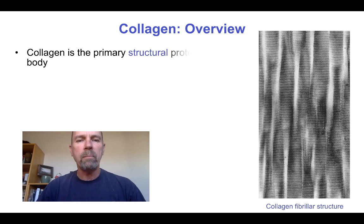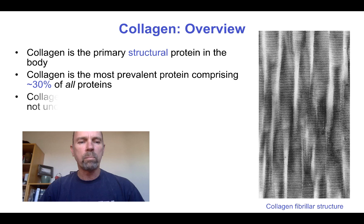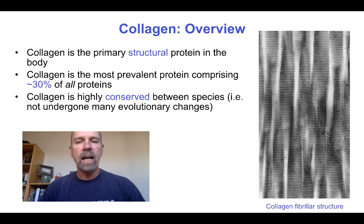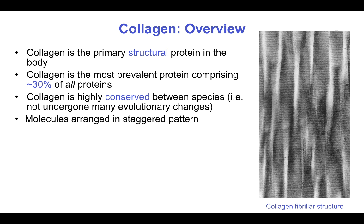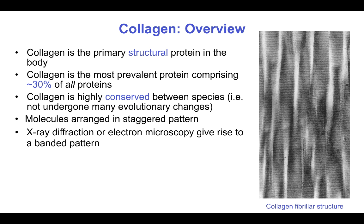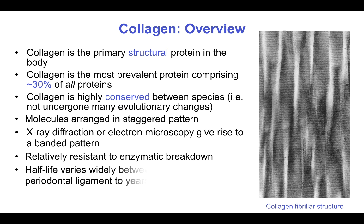Collagen is the primary structural protein in the body. It is the most prevalent protein, comprising 30% of all proteins, and it is highly conserved between species, meaning that it has not undergone many significant evolutionary changes. It is relatively resistant to enzymatic breakdown, but its half-life varies widely between tissues, from days in tissues such as periodontal ligament to years in mature bone.